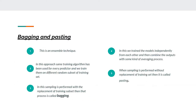Now there's bagging and pasting. Bagging is an ensemble technique where the same training algorithm is used for every predictor, and we train them on different random subsets of the training set. When sampling is performed with replacement of the training set, that process is called bagging. In this process, we use the same training algorithm but with different training subsets, train the models independently from each other, and then combine the output with some kind of averaging process. When sampling is performed without replacement of the training set, then it is called pasting.